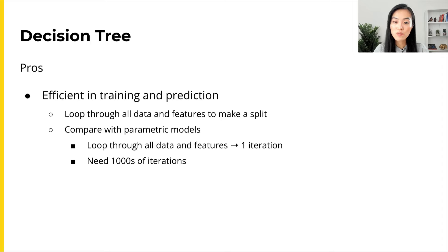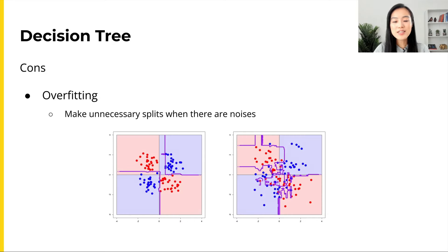In terms of making predictions, it's efficient as well. We simply take a data point and follow the split by each tree node, then arrive at a leaf node.